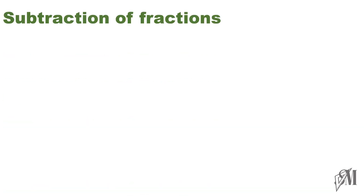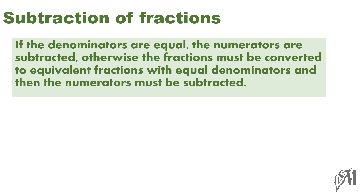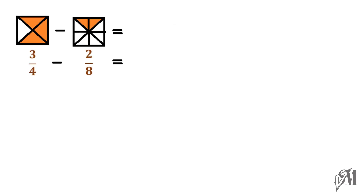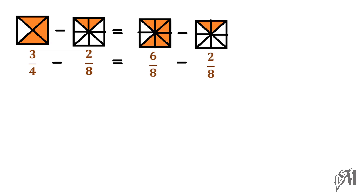Now let us look into fractions under subtraction. If the denominators are equal, you can subtract just like before. But if the denominators are not equal, you have to equate the denominators and then do the subtraction. Look at this example: 5 over 6 minus 2 over 6. The denominators are the same, so the answer is very simple — 5 minus 2, that is 3 over 6. But if the denominators are not equal — like 3 over 4 minus 2 over 8 — you have to equate the denominators, then subtract and take the answer. This is a demonstration with pictures.